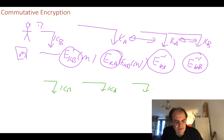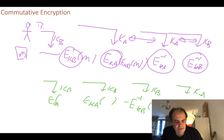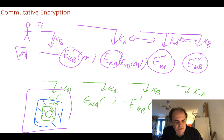With commutative encryption we can decrypt with Bob's key first and then Alice's key. So this is an encryption process with key A, then a decryption process with Bob's key, and then a decryption process with Alice's key. With this, we can have data where someone applies their key, then someone else applies their key, and so on.